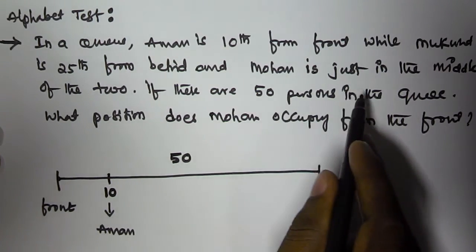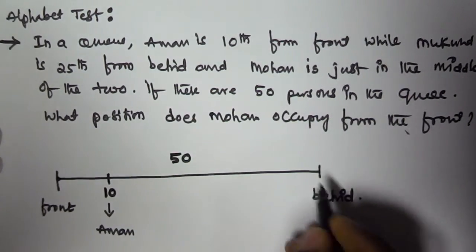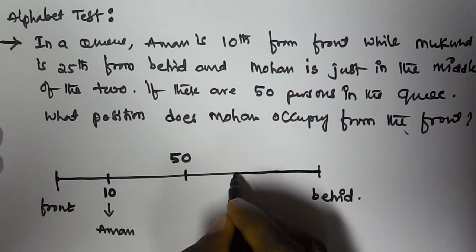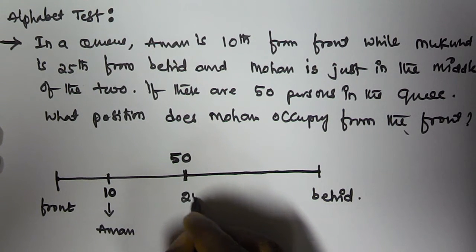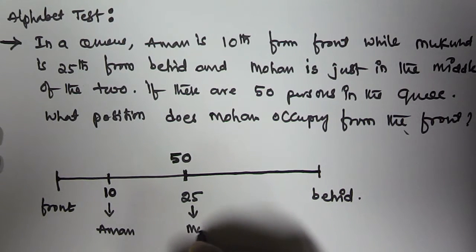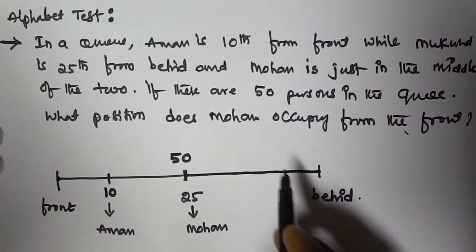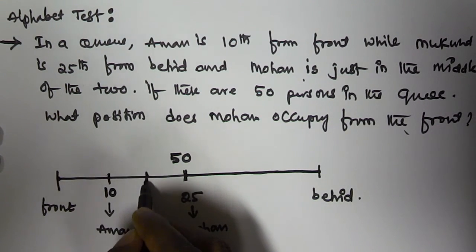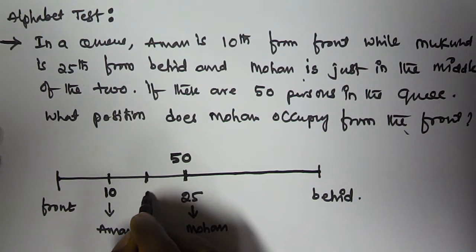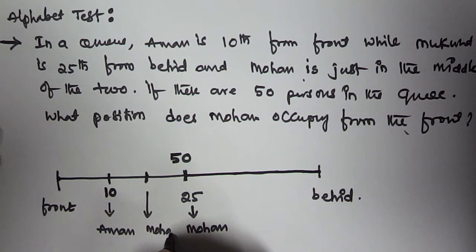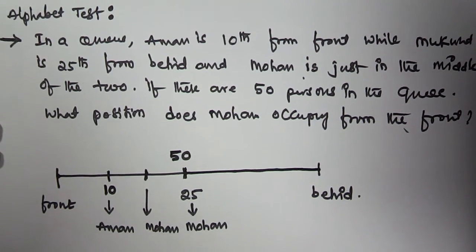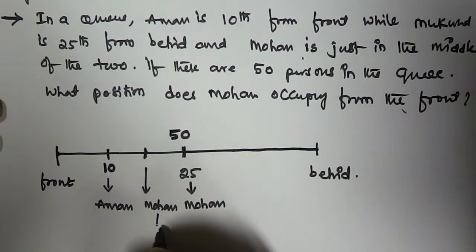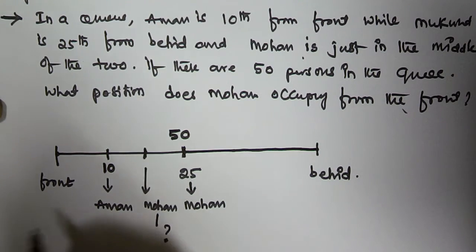Mukund is 25th from the behind, so from this direction Mukund is at 25th position. And Mohan is just in the middle of the two — somewhere between Amun and Mukund, Mohan is there. We have to find the position Mohan is occupying.